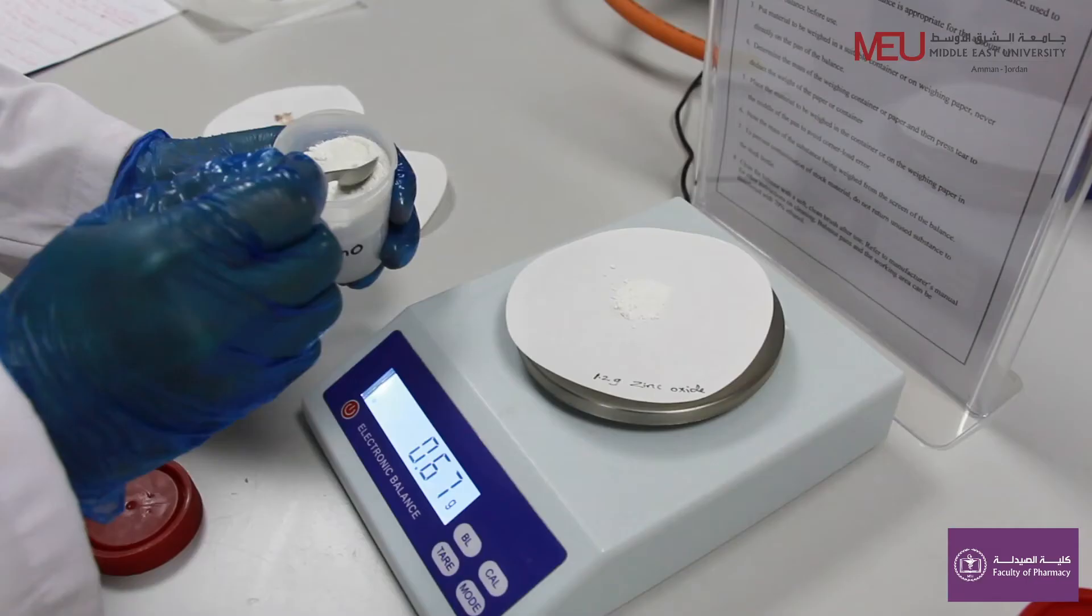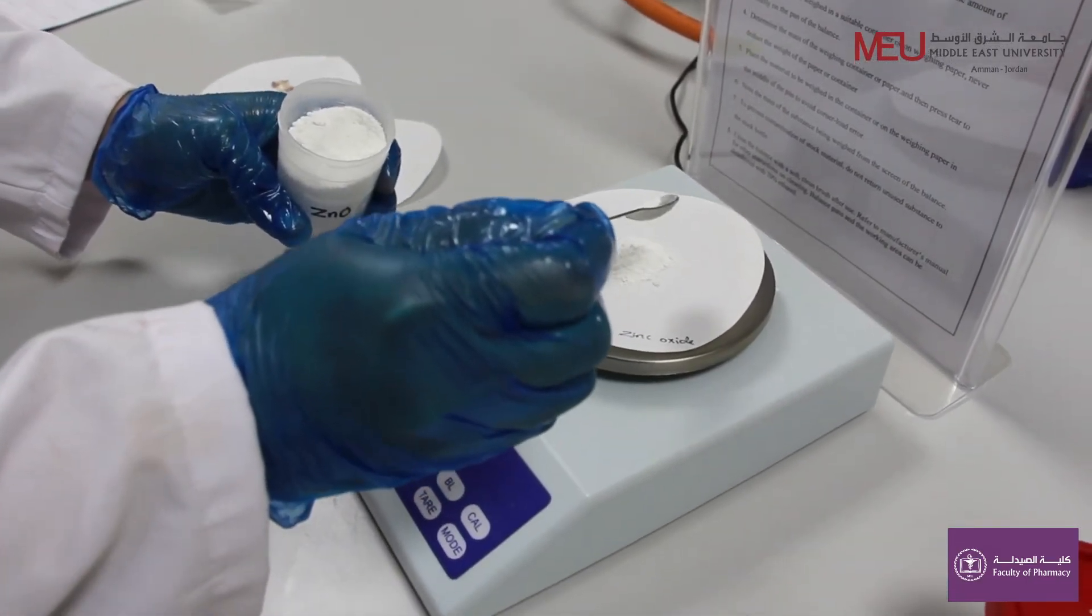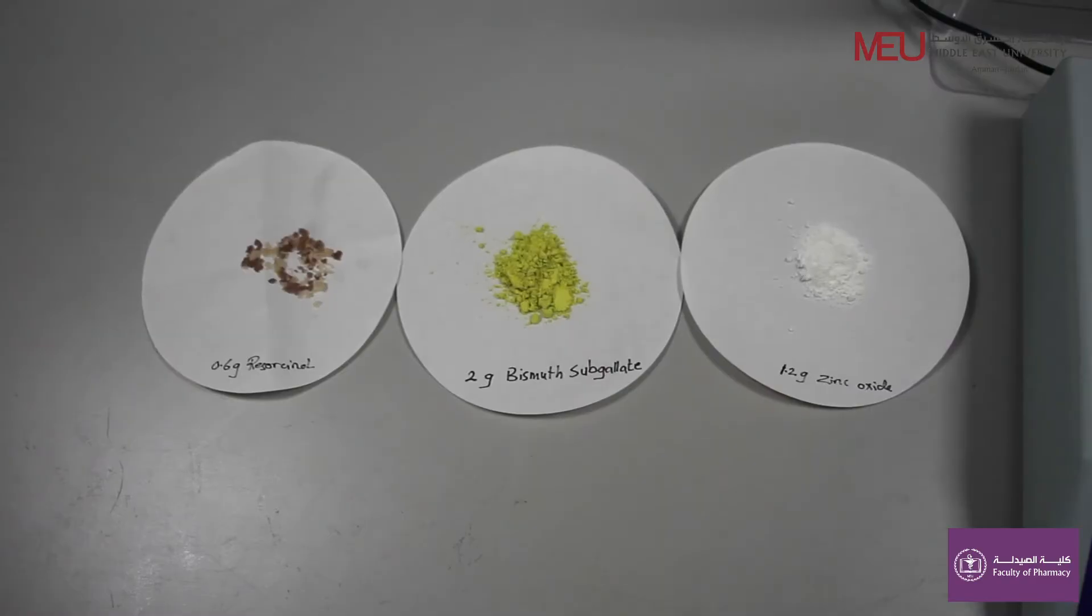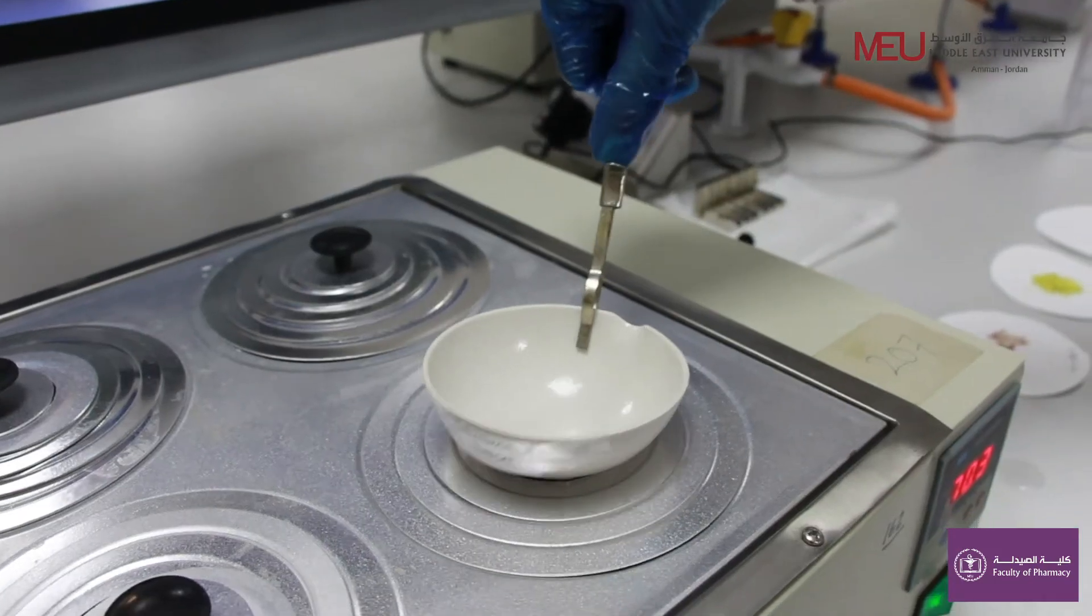Weigh 1.2 grams of zinc oxide which is used as anti-pruritic. Put powder in hot evaporating basin.